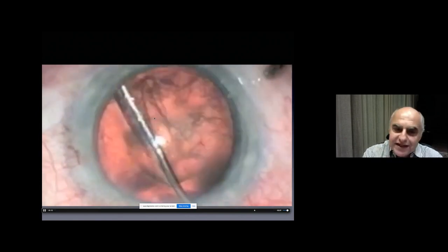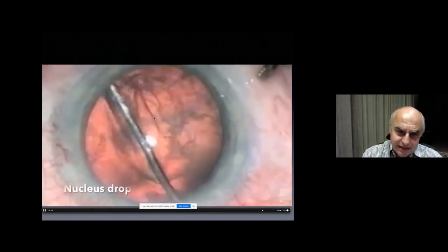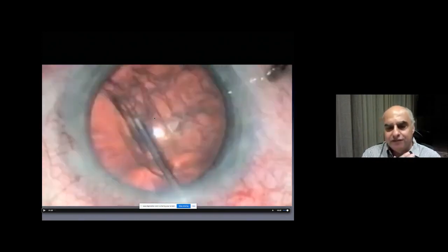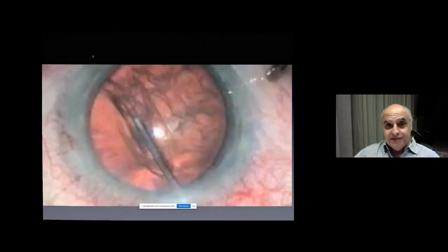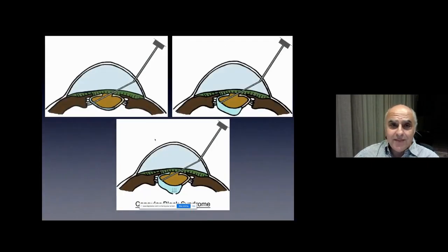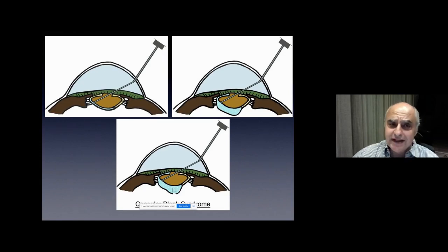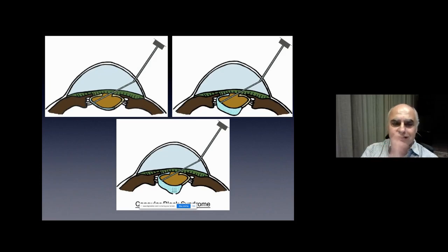You have to see it once to avoid seeing it again, because it's a really bad complication very early in the surgery. It's very important to be aware. What happens if you have a small rhexis, a bigger nucleus, and you inject forcibly? You don't give time for the wave to pass to the other side of the nucleus. That's why the proper technique of hydrodissection is not just injecting — you have to see the wave passing to the other side.